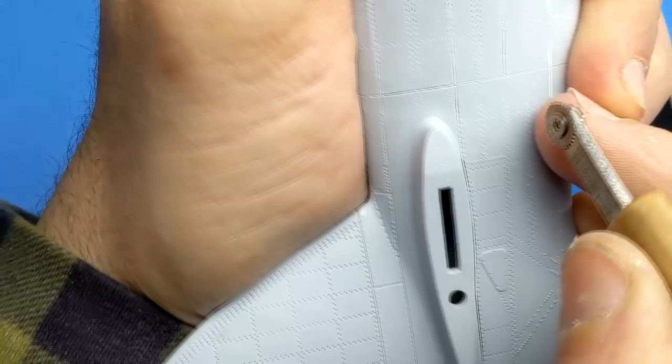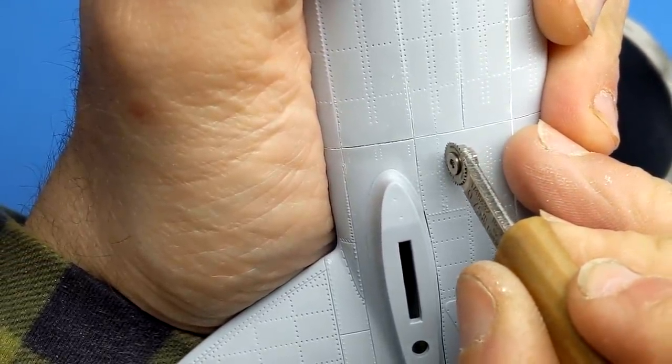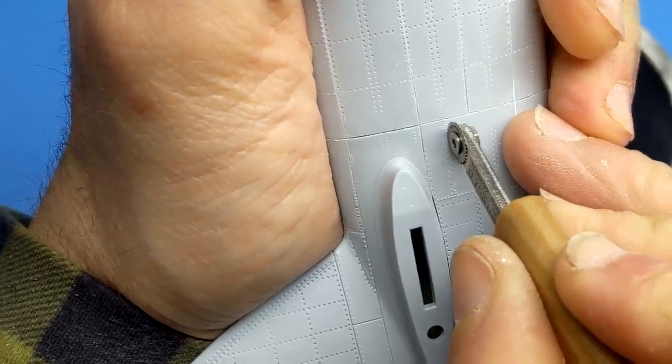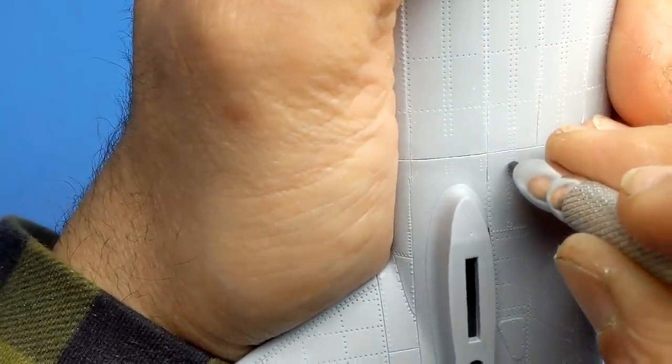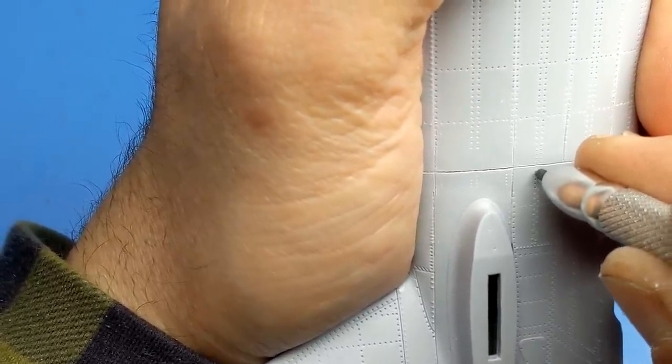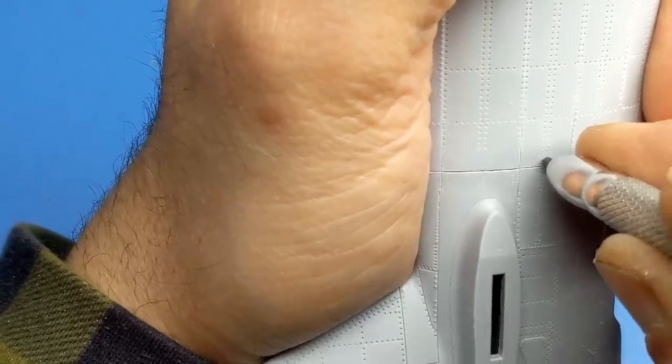For some odd reason my 1/48 rivet tool matched up to the rivets on the kit so I decided to use that as a guide to come back in with that scribe tool and to redo the rivets that had also been nuked in cleanup. And now after a month and a half of gluing and sanding and interior work it is time to move on to paint.